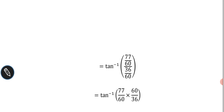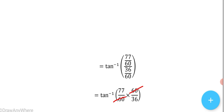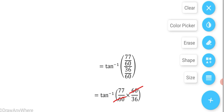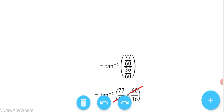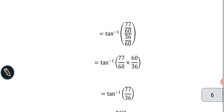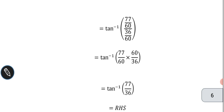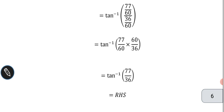That equals tan⁻¹(77/60 × 60/36). The 60s cancel, leaving tan⁻¹(77/36), which is equal to the RHS. Hence proved.